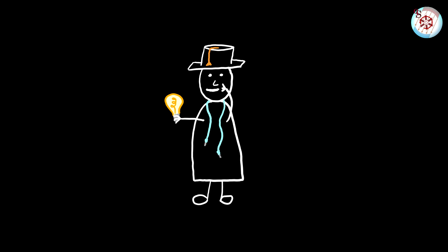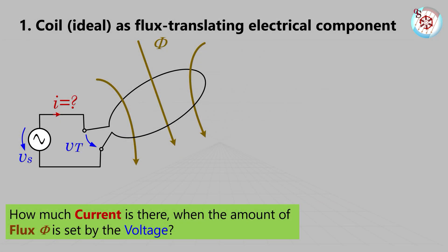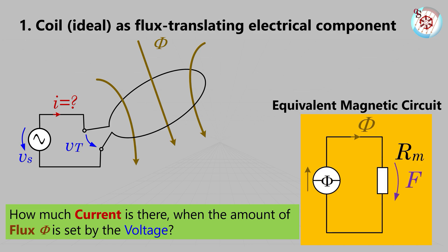So we got that connection between flux and voltage, but how much current do I have on the electrical side? It doesn't work without current, does it? For that, we have to take a peek at the magnetic part. Generally, the amount of magnetomotive force is determined by the amount of flux that passes through a certain magnetic resistance, also known as reluctance.